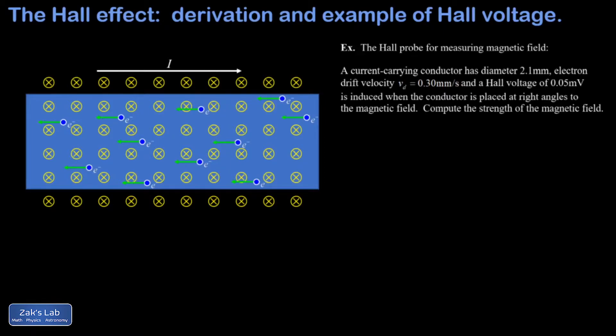There's a current flowing from left to right in this conductor, and there's a magnetic field across the conductor going into the page—that's what all the x's mean. Now recall that if a current is moving to the right in a conductor,